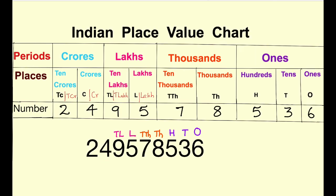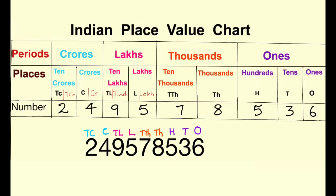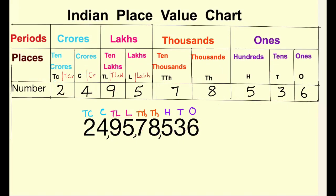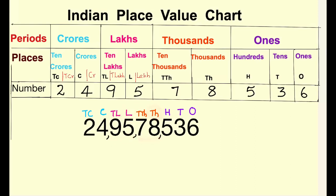4 is in crore's place and 2 is in ten crore's place. We insert commas from right. The first comma comes after the hundreds place. The second comma comes 2 digits later, after the ten thousands place. The third comma comes after another 2 digits, after the ten lakhs place. We read the number from left to right — so the number is 24 crore 95 lakh 78 thousand 536.